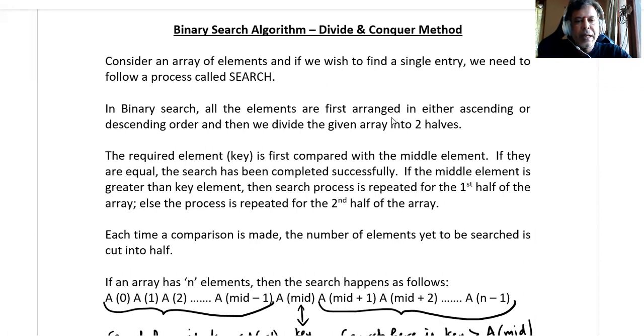In binary search, all the elements are first arranged in either ascending or descending order, and then we divide them into two halves. The required element, which we call the key element, is first compared with the middle element. If they are equal, then the search has been completed successfully.